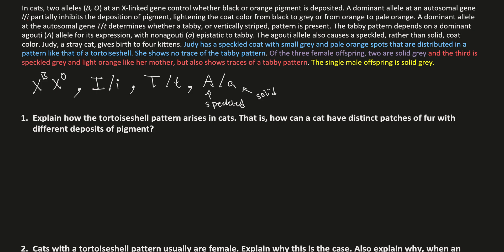Judy, a stray cat, gives birth to four kittens. Judy has a speckled coat with small gray and pale orange spots distributed in a pattern like that of a tortoiseshell. She shows no trace of a tabby pattern. Of the three female offspring, two are solid gray, and a third is speckled gray and light orange like her mother, but also shows traces of a tabby pattern. The single male offspring is solid gray.